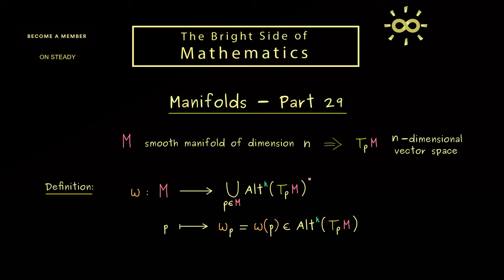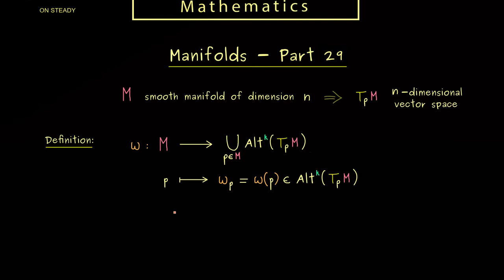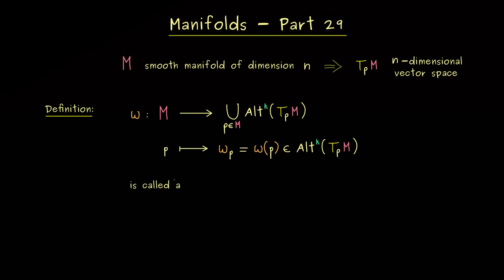And now it should not be a surprise for you that this object gets a very similar name. In fact, we simply call it a k-form again. However, we call it a k-form on the manifold M. So there you see, this is the difference. We put a lot of k-forms together to get a k-form on the manifold.